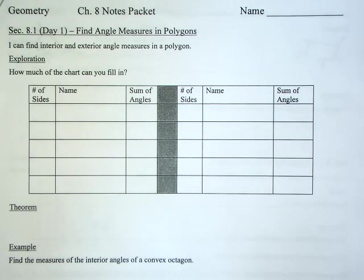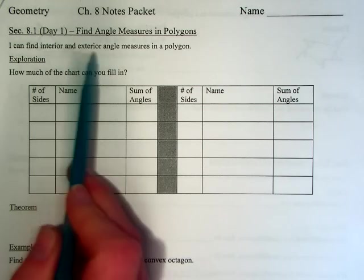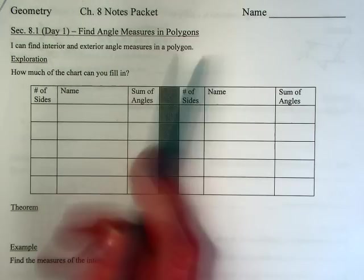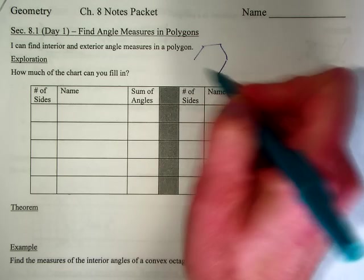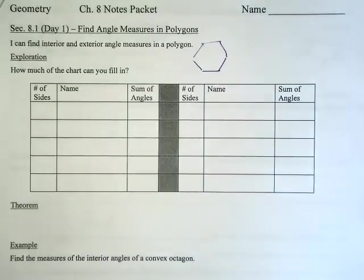Okay, this is section 8.1. Today we're going to do finding angle measures in polygons. So today we've got to be able to find interior and exterior angles in a polygon. Polygon is just a shape that is closed. Could be tons of sides, could be three sides, could be infinite number of sides.